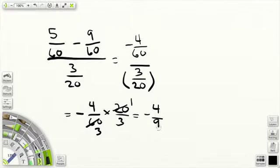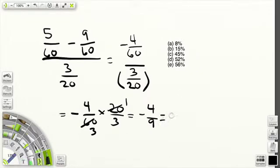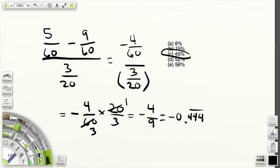So we can reduce this, and that gives us minus 4 over 9. Because there's a negative in front, that indicates it's a decrease — and we're looking for the decrease. Minus 4 over 9 is equivalent to minus 0.4 repeating, so we can take that to be approximately a 45% decrease.